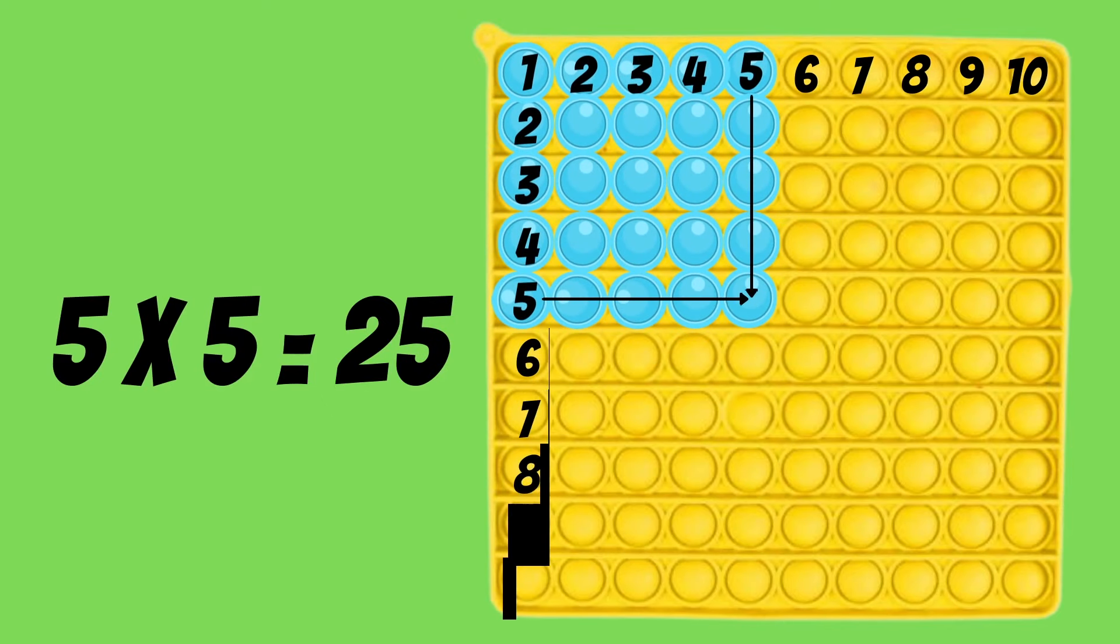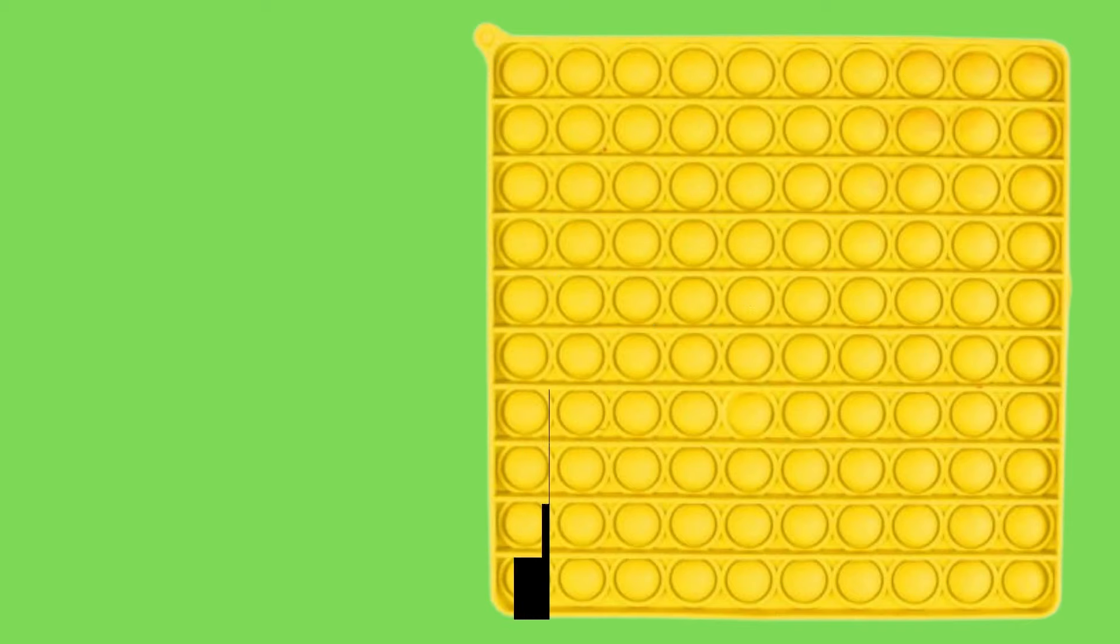Another example is 5 times 5. So, find the 5 in the top row and the 5 in the column, and follow to where your fingers meet, and then pop all of those bubbles. If you were to count them, there would be 25 bubbles.